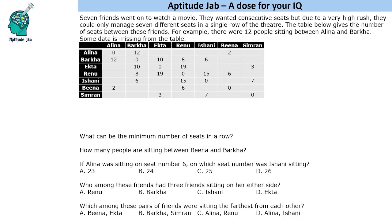Hello everyone, welcome to AptitudeJag. This set says that there are 7 friends who went to watch a movie and they were sitting in 7 different seats in a single row. This table gives the number of seats between these friends.